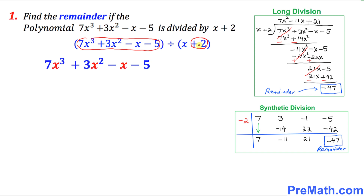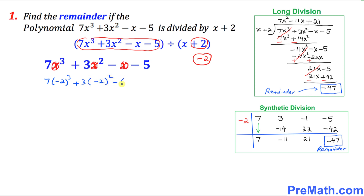The opposite sign of positive 2 is going to be negative 2. So wherever you see these x variables, just replace them with negative 2 and see what happens. This becomes 7 times (−2)³ + 3 times (−2)² − (−2) − 5. We just filled in the blanks.